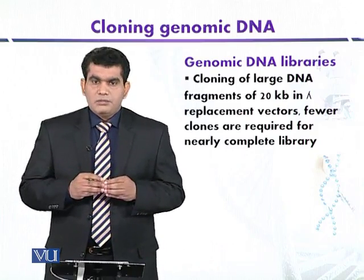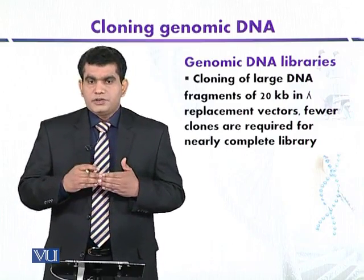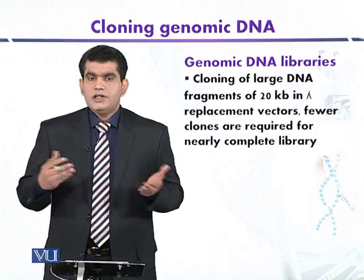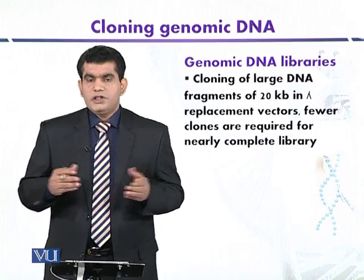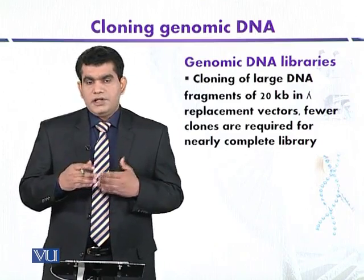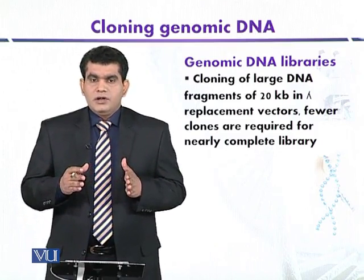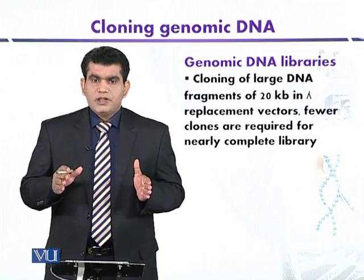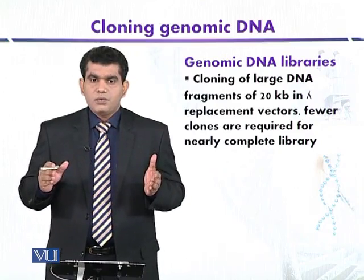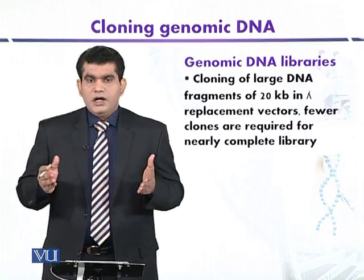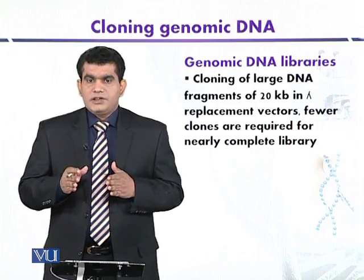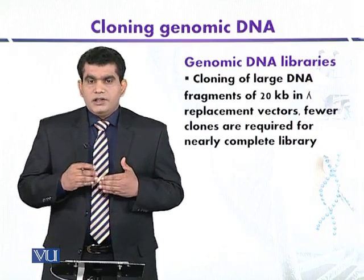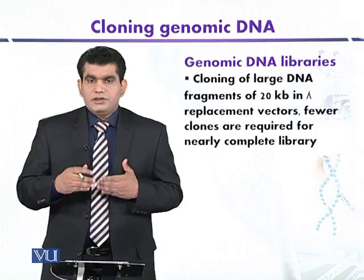This problem can be overcome by using a suitable cloning vector like bacteriophage lambda, which can accommodate around 20 kilobase DNA fragments. Here we can digest the source DNA randomly to generate random DNA fragments representing the whole genome of human or any other source, ligate them with bacteriophage lambda accommodating around 20 kilobase pairs, and then screen further.